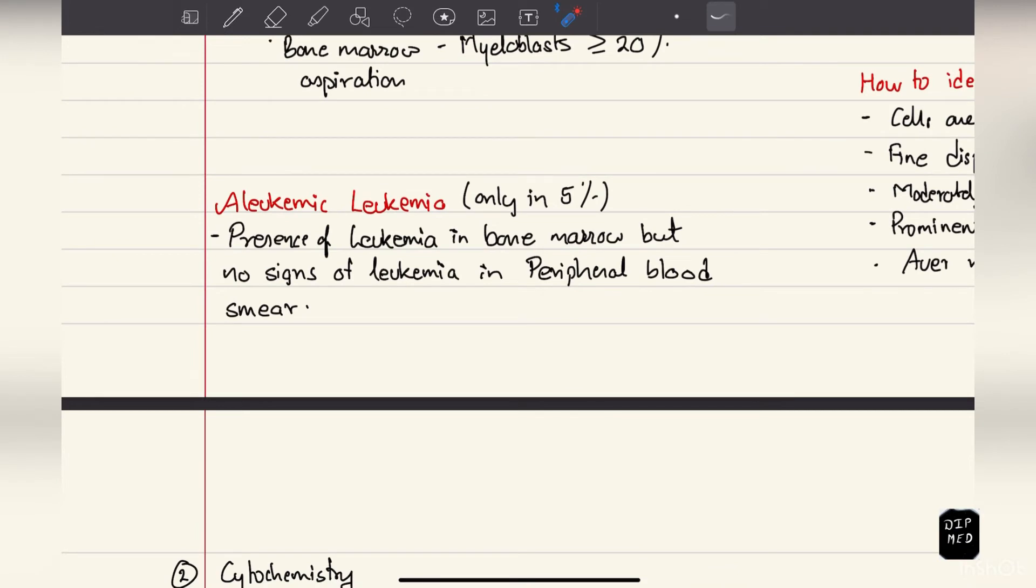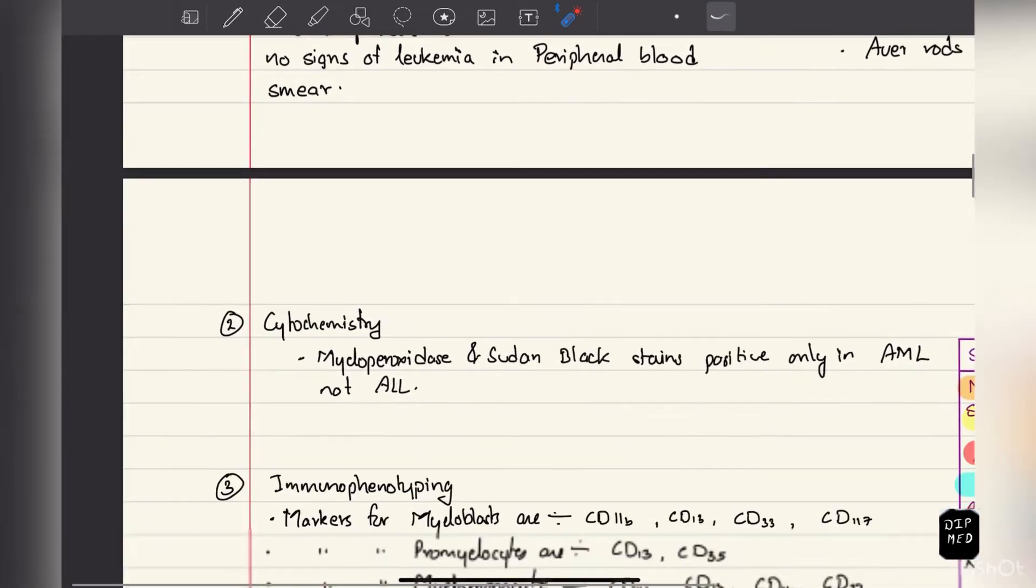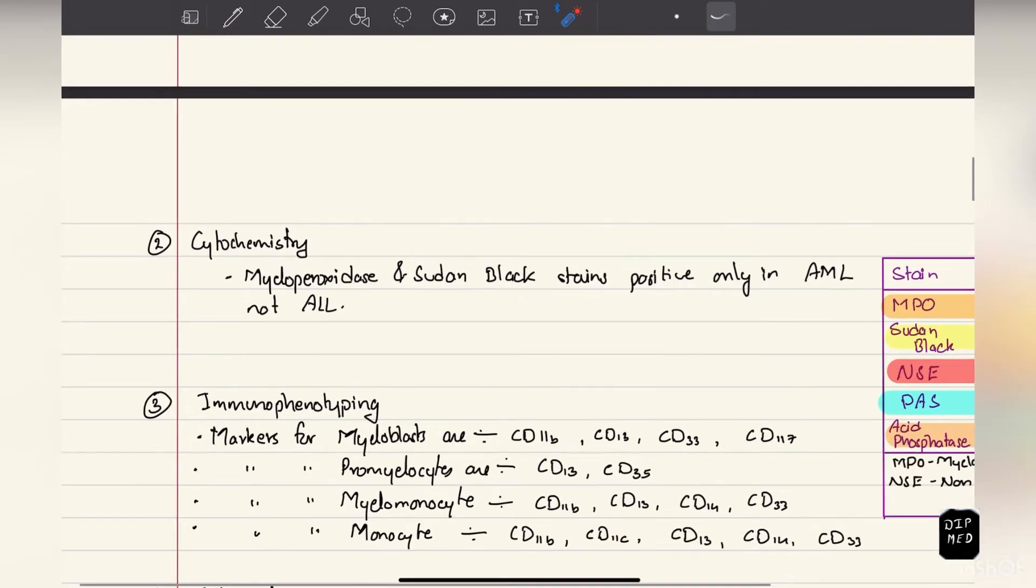There is a term called aleukemic leukemia, which is seen in 5% of the cases. Here leukemia is seen in the bone marrow but it does not present in the peripheral blood smear.